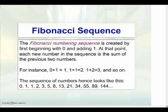Basically, the numbering sequence works like this: it begins with 0 and 1, and each new number in the sequence is the sum of the previous two numbers. For instance, 0 plus 1 is 1, 1 plus 1 is 2, 1 plus 2 is 3, and so on. The beginning numbers are: 0, 1, 1, 2, 3, 5, 13, 21, 34, 55, 89, 144.